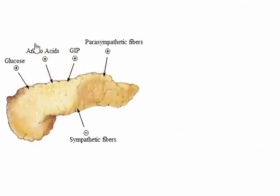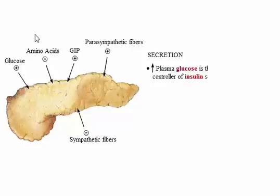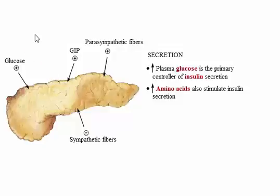Insulin controls metabolic activity in the feasting or absorptive state that occurs during and immediately following a meal. The rise in plasma glucose levels stimulates pancreatic beta cells to secrete insulin. Rising blood levels of other nutrients, like amino acids, also stimulate insulin secretion.